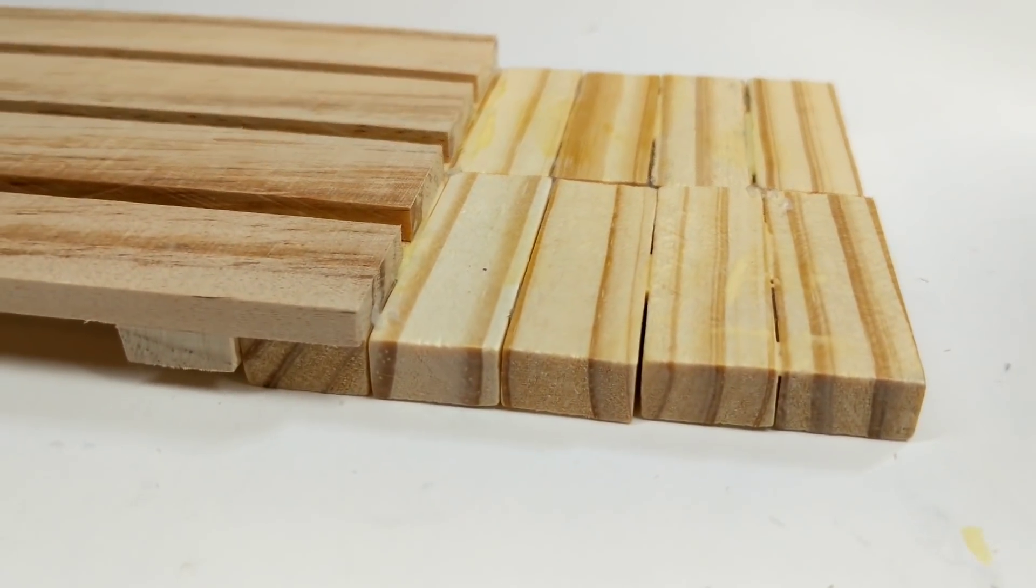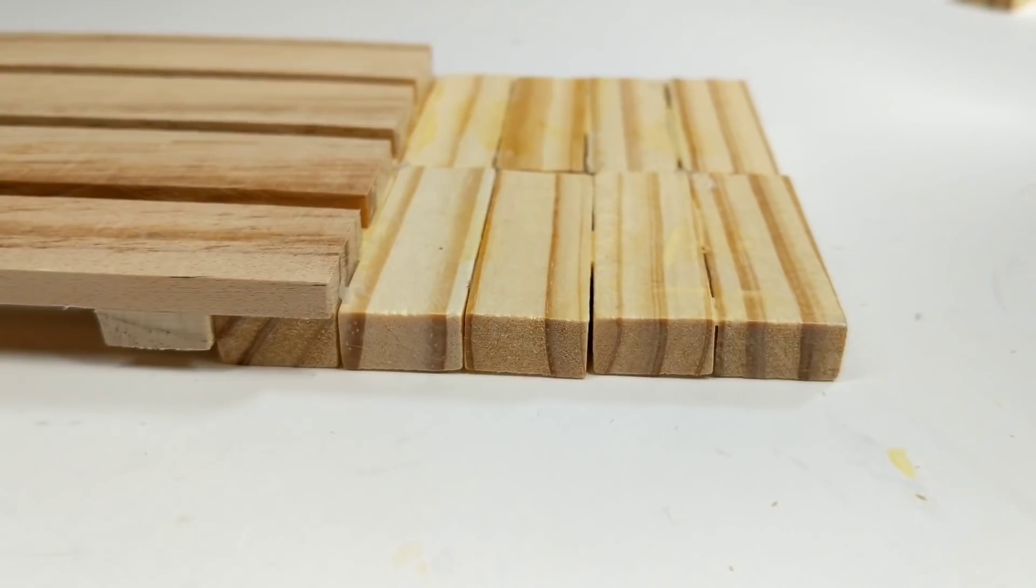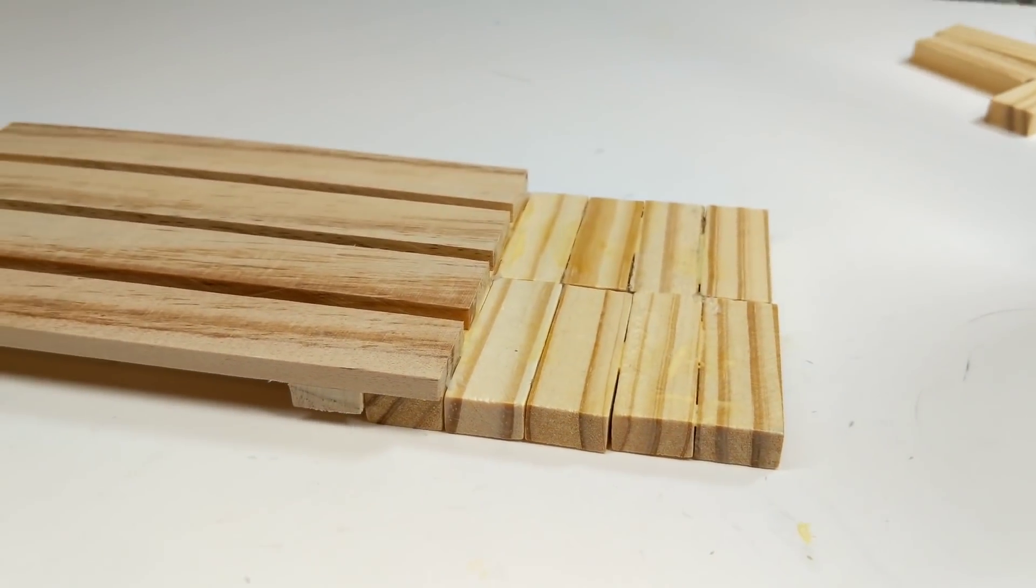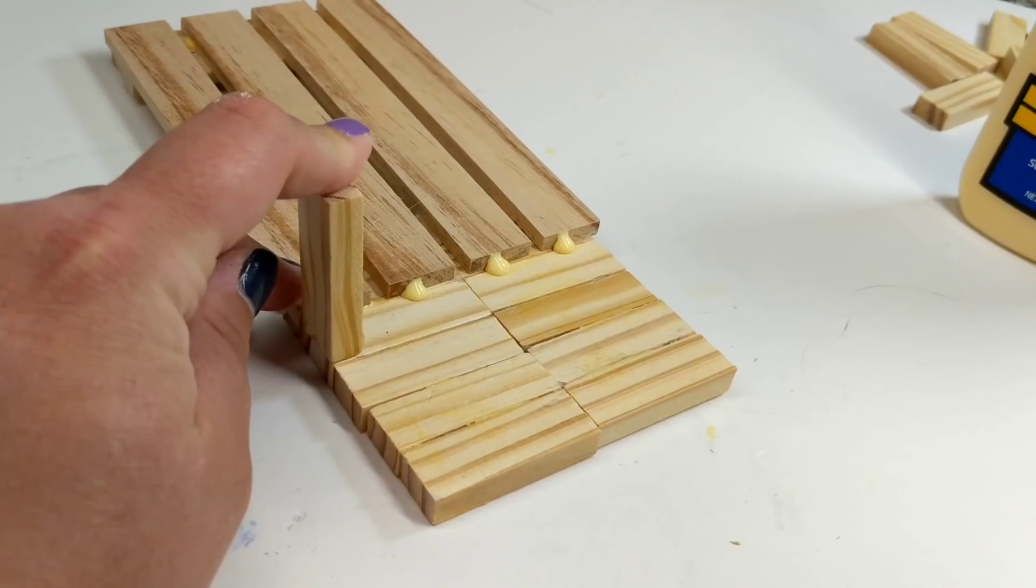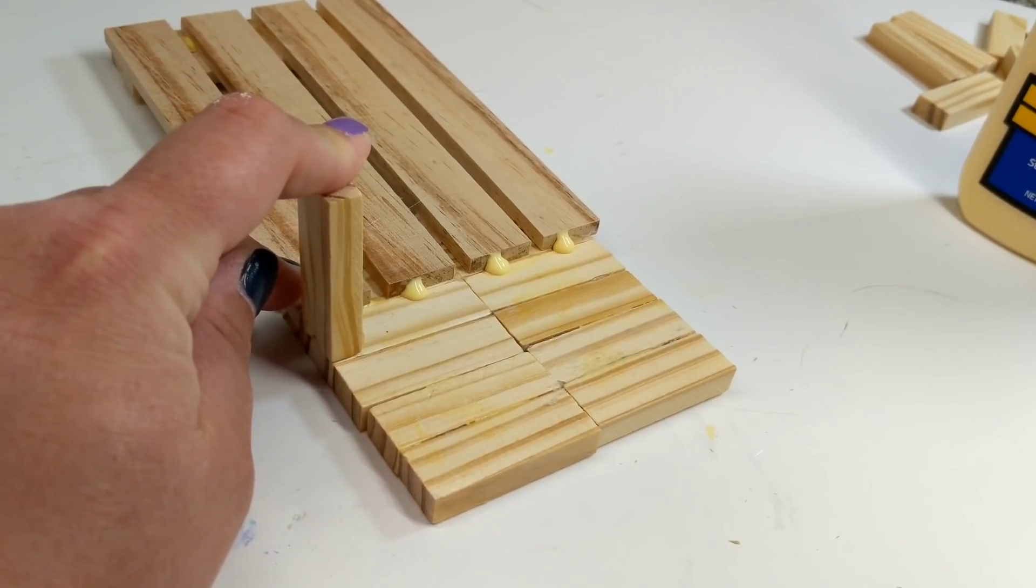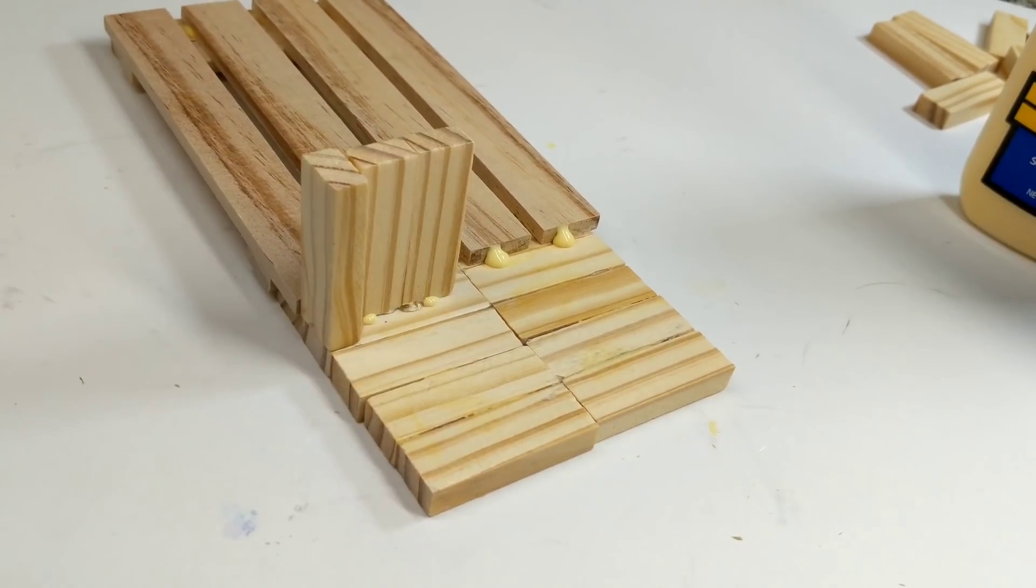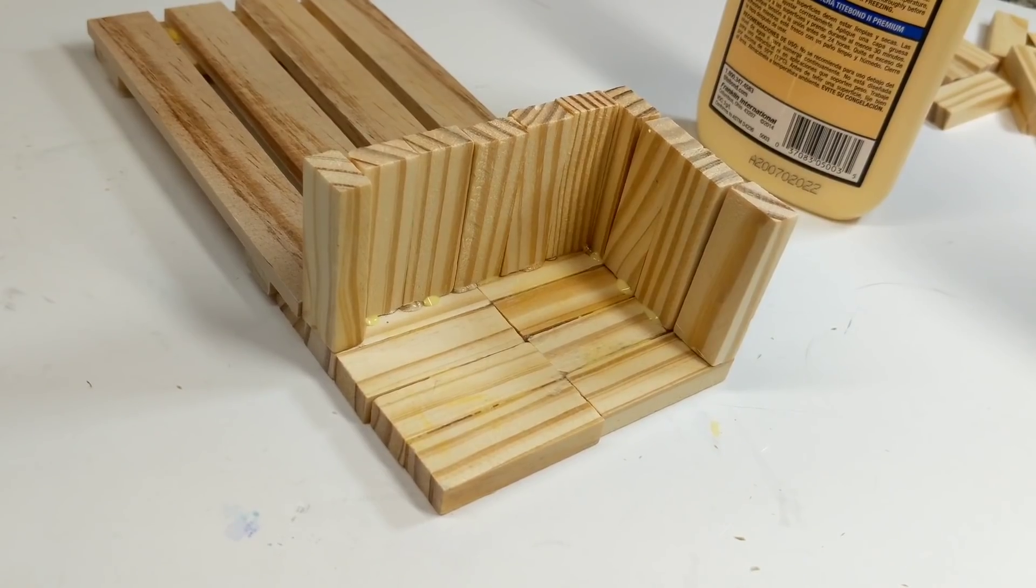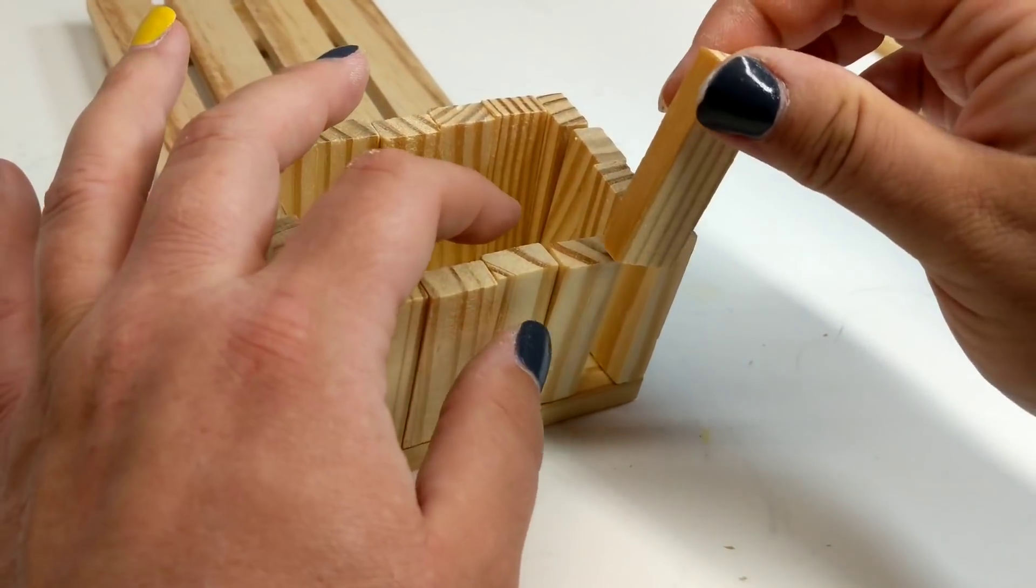We're going to need one of the larger palettes and then you're going to want to glue five tumbling blocks on the edge, right behind one another like this. And then on this side, we're going to glue them standing up like this all the way around.